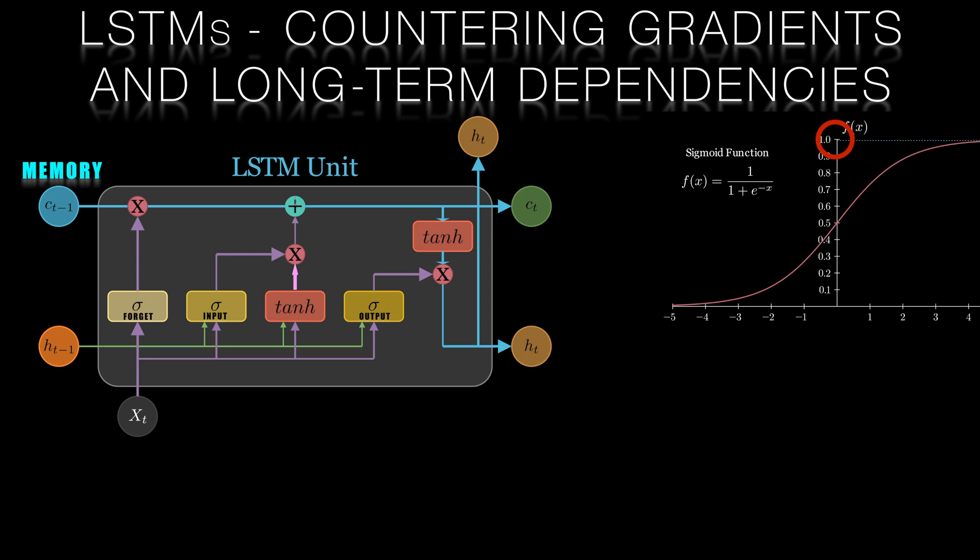In addition to these three gates there are two other key components in the LSTM architecture: the input modulation and the cell state update. These both contain the hyperbolic tangent or tanh activation functions. Recall that these return a value between minus 1 and plus 1.